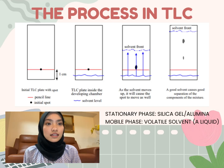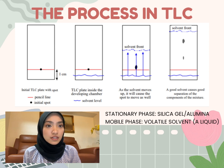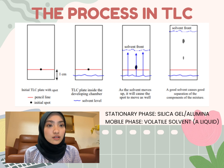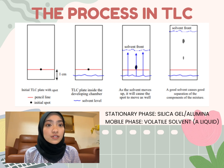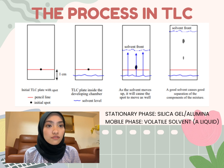Next is the process in thin layer chromatography (TLC). The first and second steps are similar to paper chromatography: the sample is spotted using a capillary tube on a drawn line, then the TLC plate — which is the stationary phase used in this technique — is inserted into the solvent-saturated chamber. Make sure the TLC plate is dipped into the solvent without exceeding the drawn line. As the solvent moves up, it causes the spots to move as well. A good solvent causes good separation of the components, producing different separated components and a solvent front.